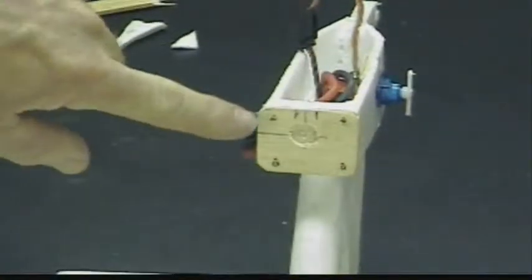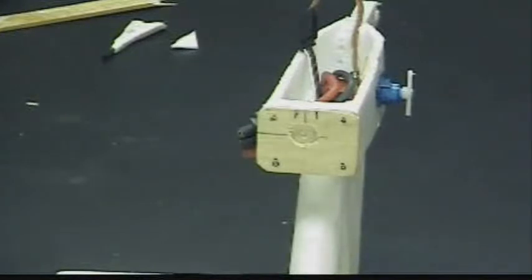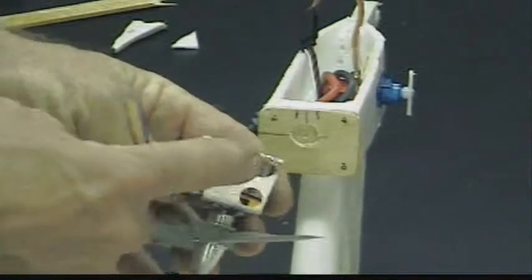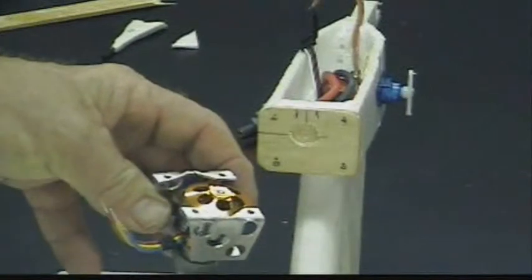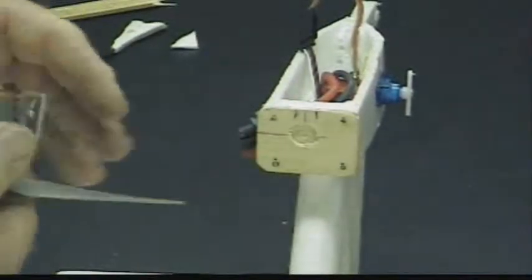I glued a piece of plywood on the front of the nacelle for the motor. I designed it for this motor. Unfortunately, when I made this motor mount, I made it a little too short and the motor sticks out the back just a hair. I had to drill a little hole in there.